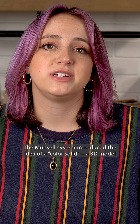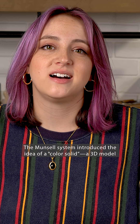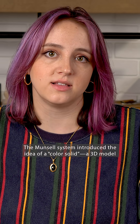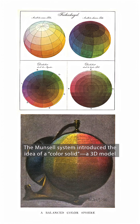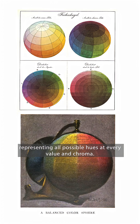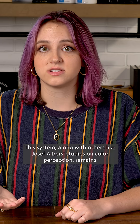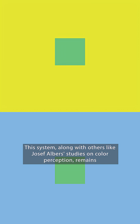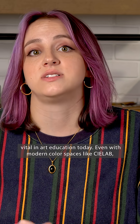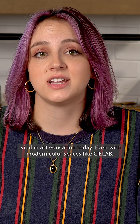The Munsell system introduced the idea of a color solid — a 3D model representing all possible hues at every value and chroma. This system, along with others like Joseph Albers' study on color perception, remains vital in art education today.